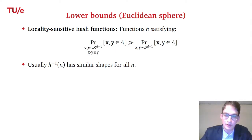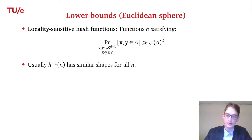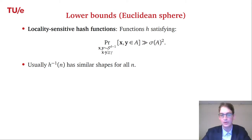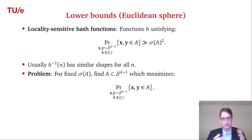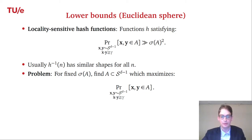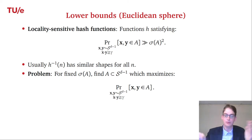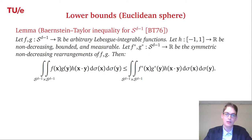The right-hand side — the probability that x and y are both in region A when drawn independently and uniformly — can be written as the square of the relative volume of A on the sphere. We want to find regions A for which the conditional probability (given x·y ≥ gamma) is much bigger than this squared volume. This can be rephrased as: given a fixed size for region A, find the region maximizing the probability that two close vectors both land in A.